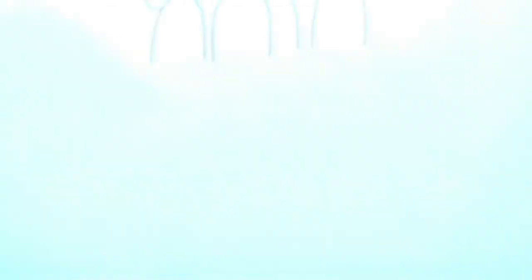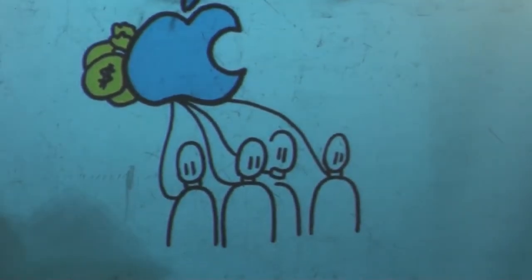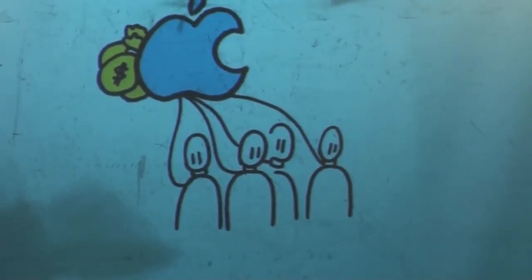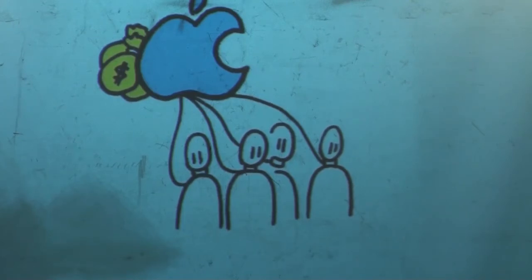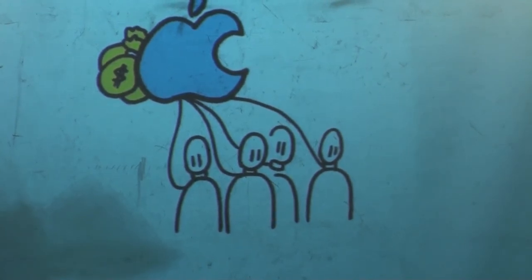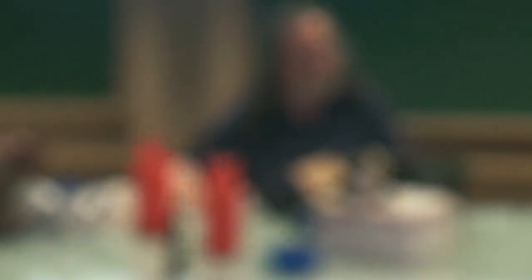So we want to be free, but there are obstacles. One of them is social inertia. The companies that distribute proprietary software — some of them get lots of money.